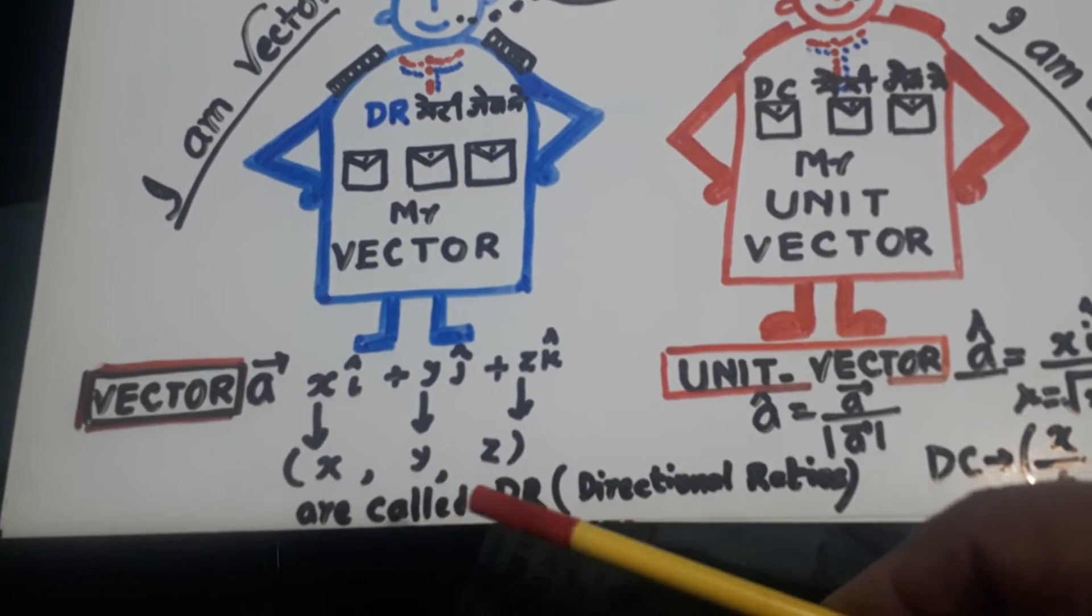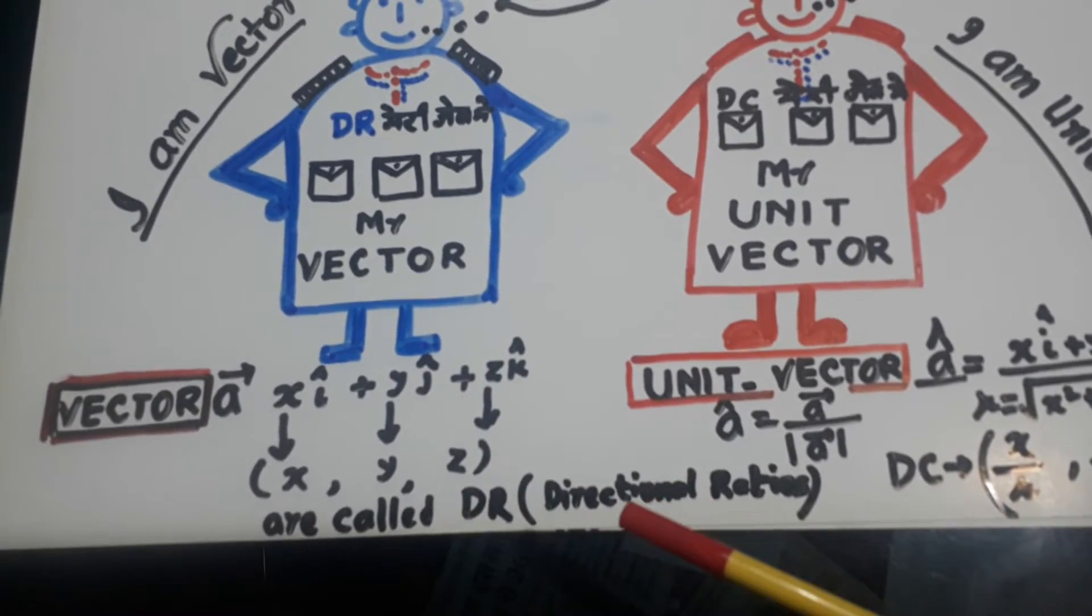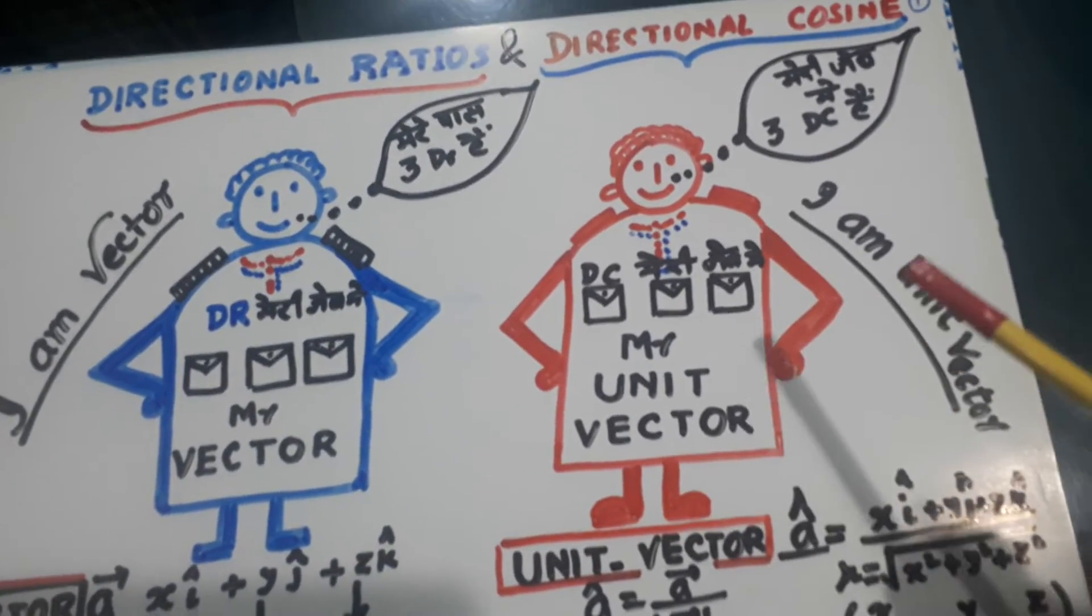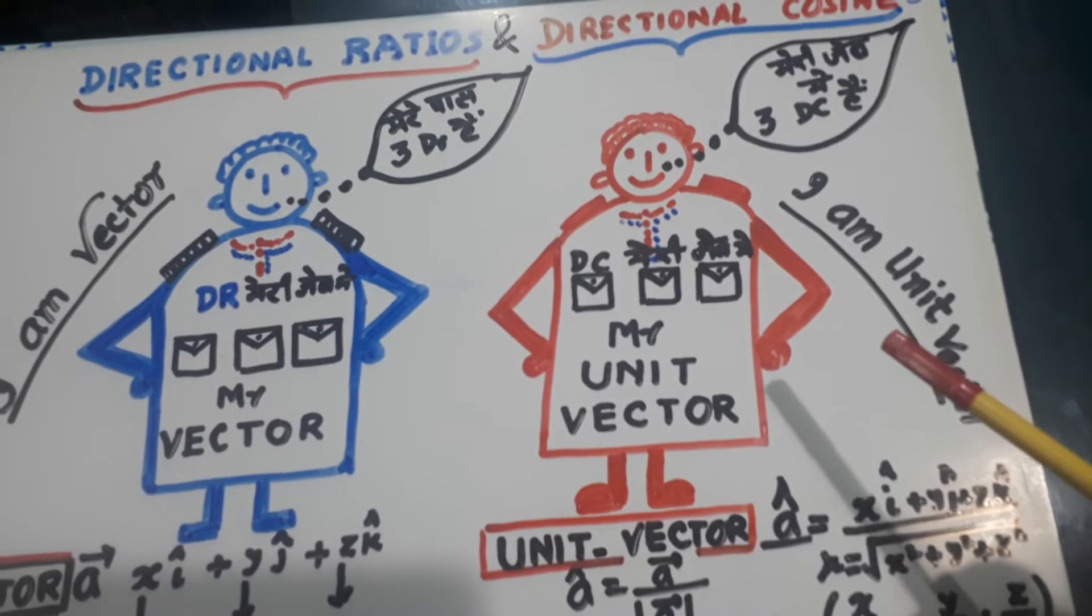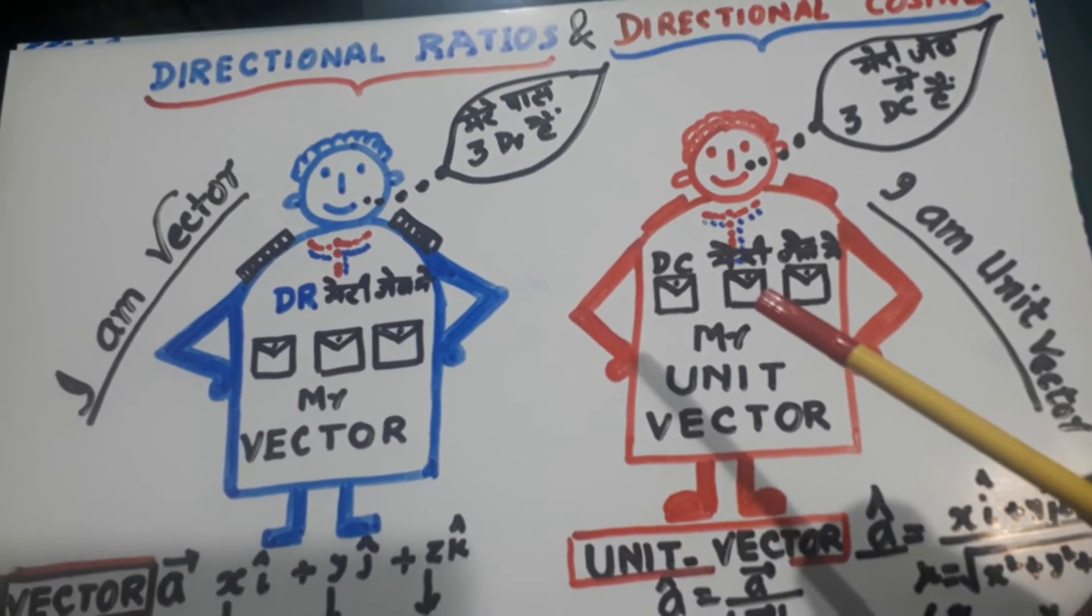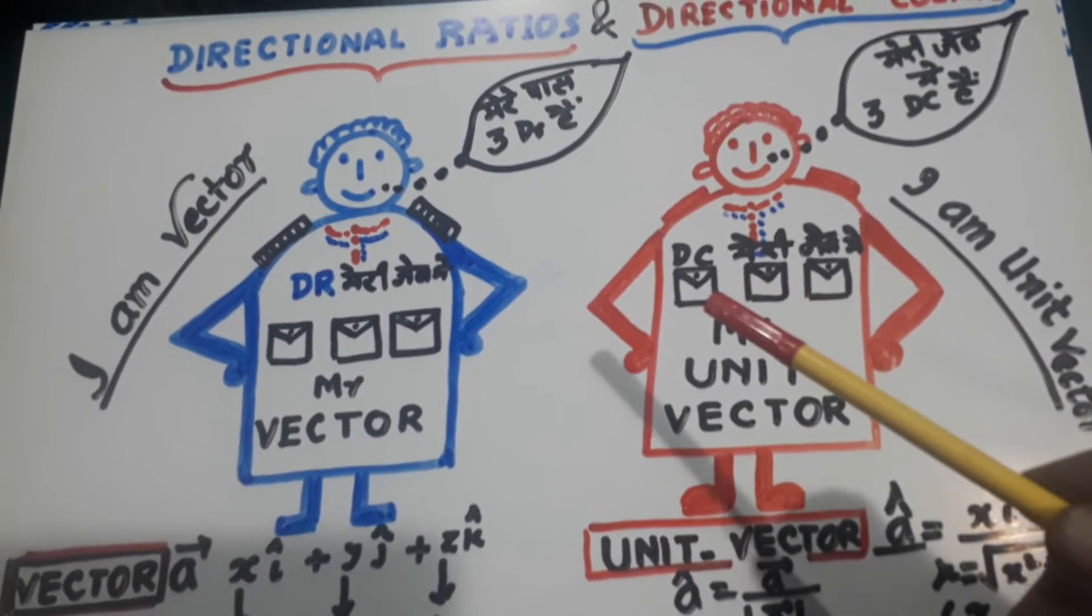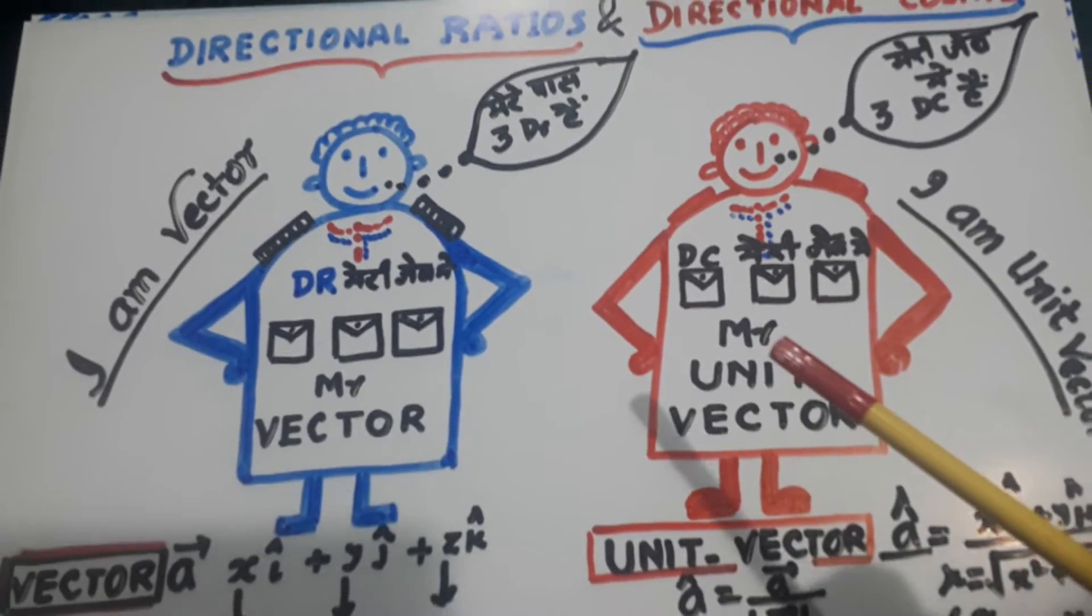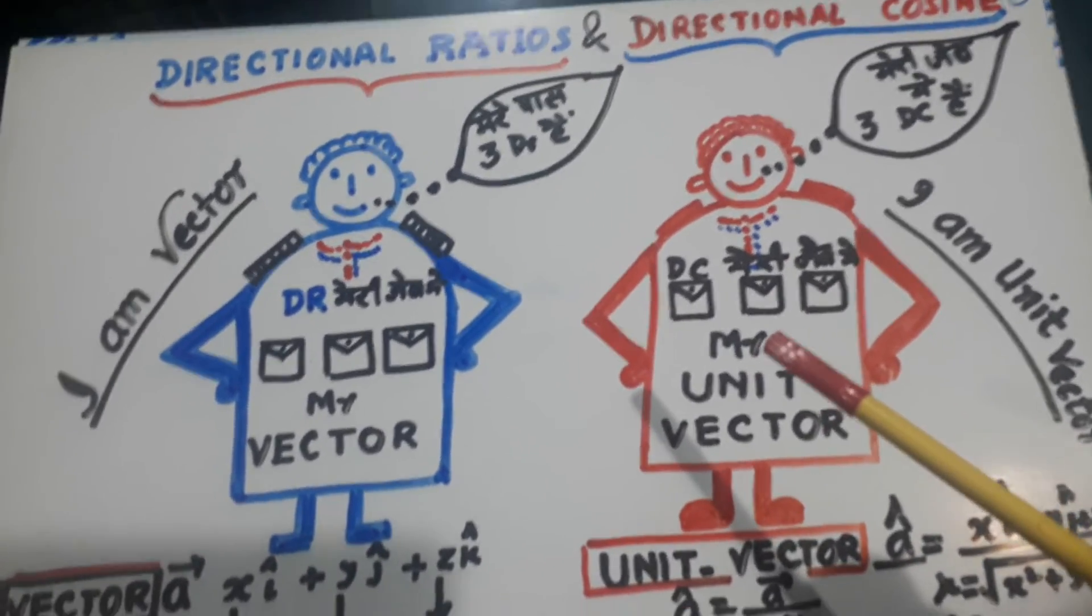they are the doctors. These are three doctors, directional ratios. Now let us go to this. He says, I am unit vector. And there are three components of the unit vector. They are called DC directional cosines.